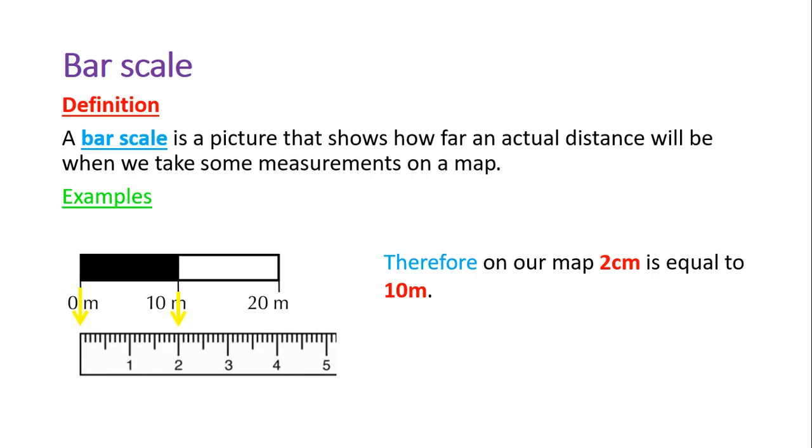Now we need to simplify and get it to a number scale. 2 centimeters is 10 meters. We need to change to the same units, so we're going to change 10 meters into centimeters, and that means 2 centimeters equals 1000 centimeters. Next we need to simplify to get 1 equals something. If 2 centimeters equals 1000 centimeters, then 1 centimeter will equal 500 centimeters. We divide both sides by 2.